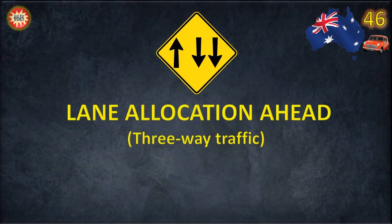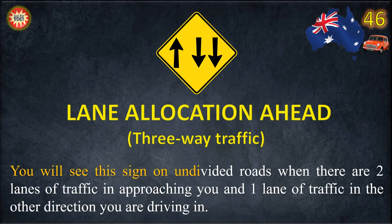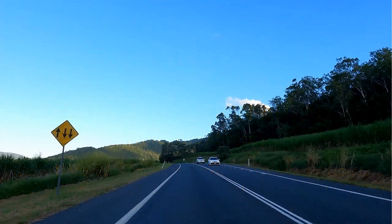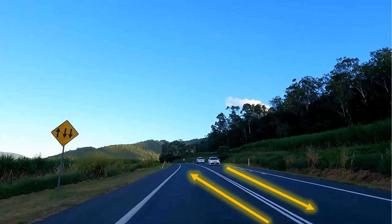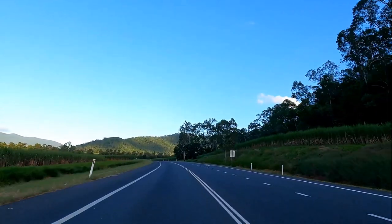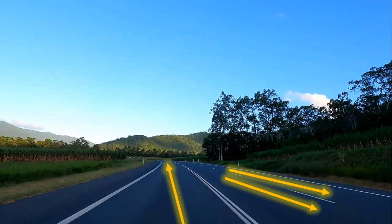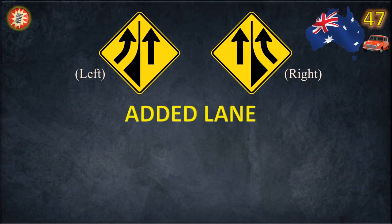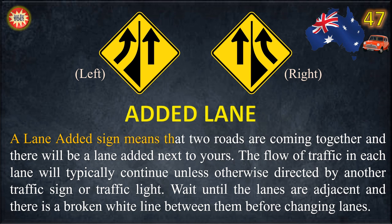Lane allocation ahead. You will see this sign on undivided roads when there are two lanes of traffic approaching you and one lane of traffic in the direction you are driving. A lane added sign means that two roads are coming together and there will be a lane added next to yours. The flow of traffic in each lane will typically continue unless otherwise directed by another traffic sign or traffic light. Wait until the lanes are adjacent and there is a broken white line between them before changing lanes.